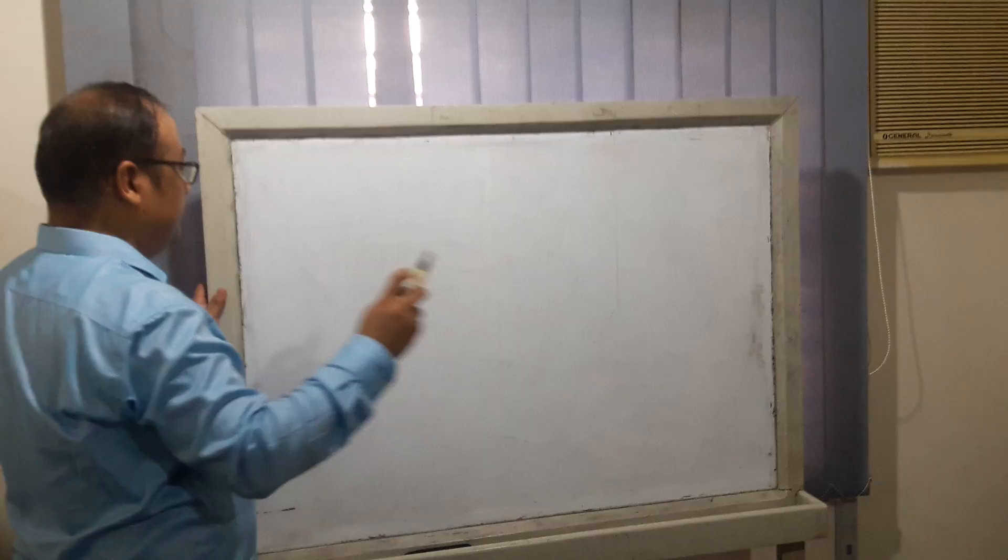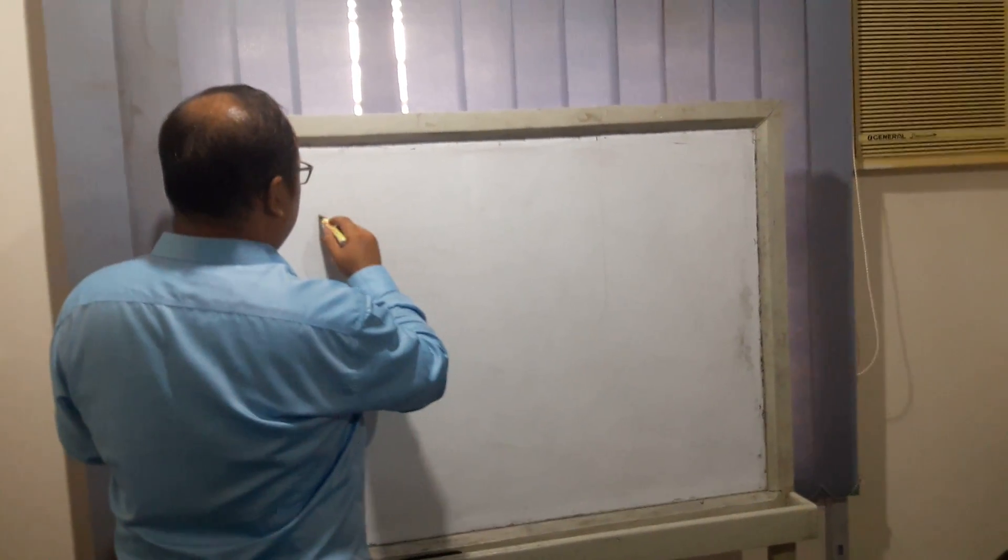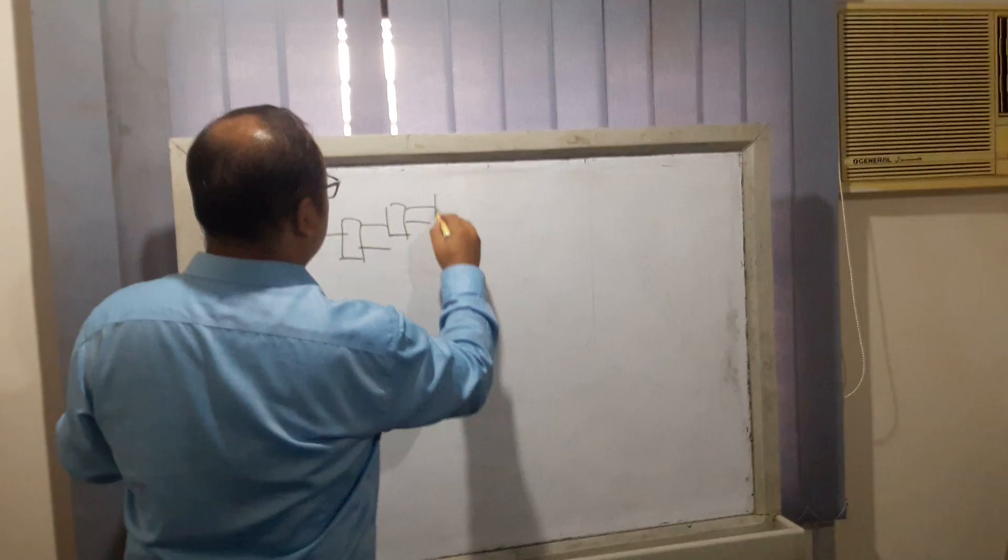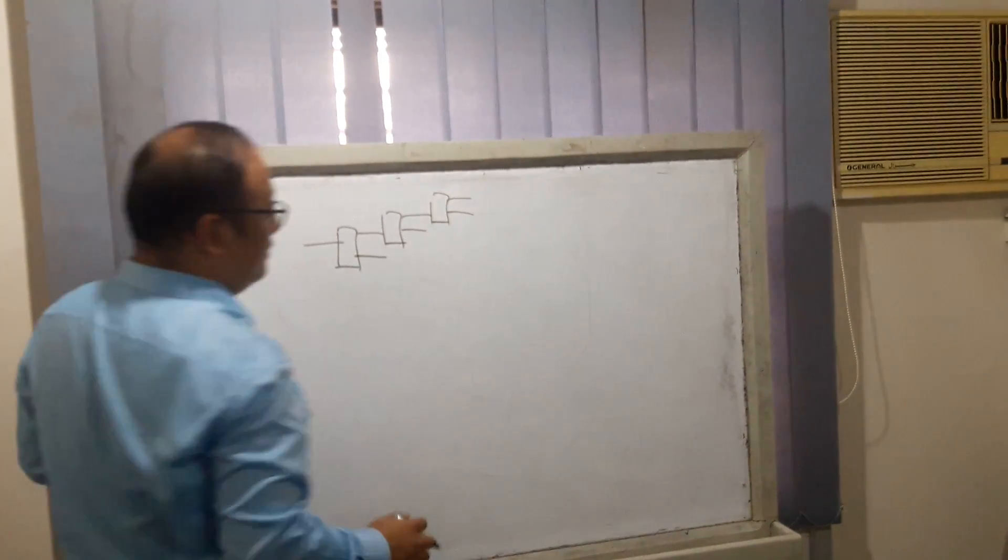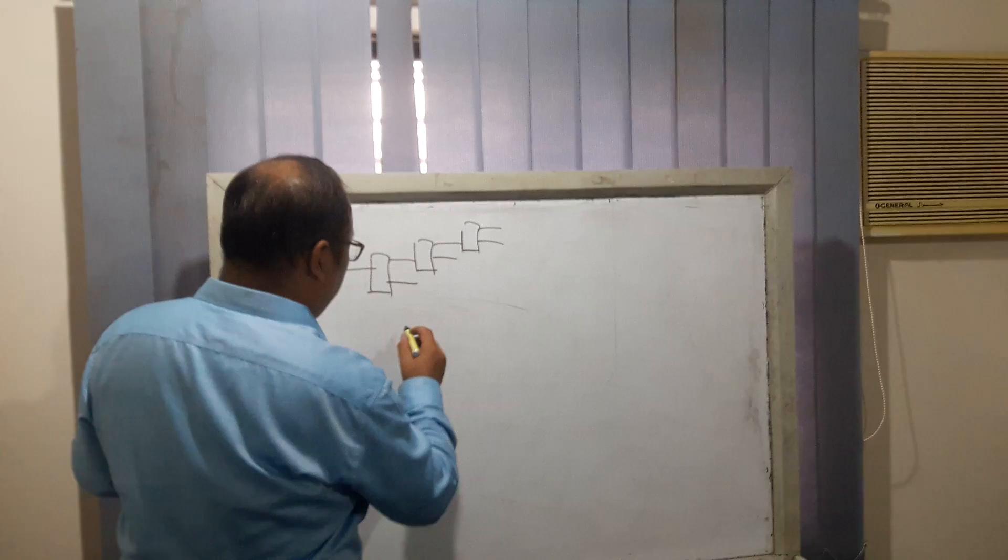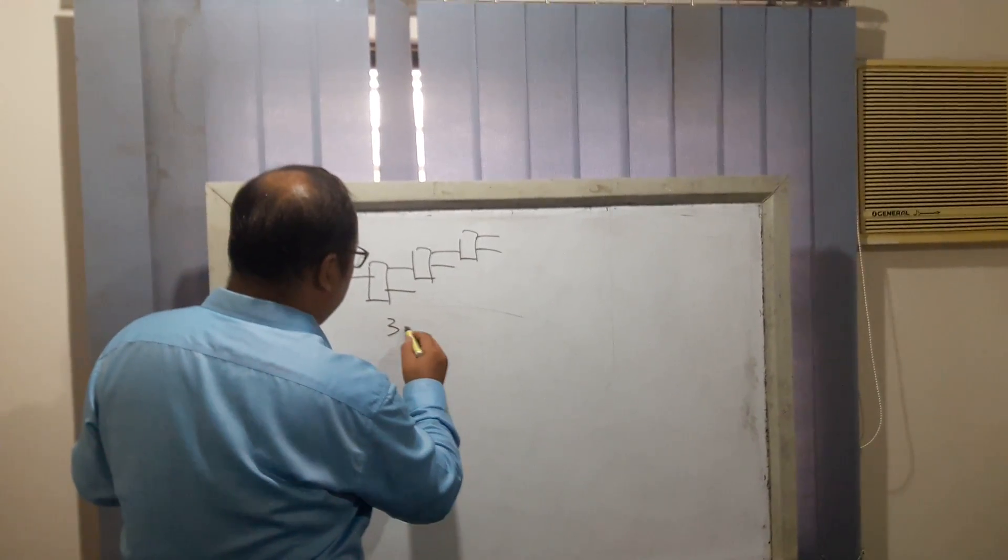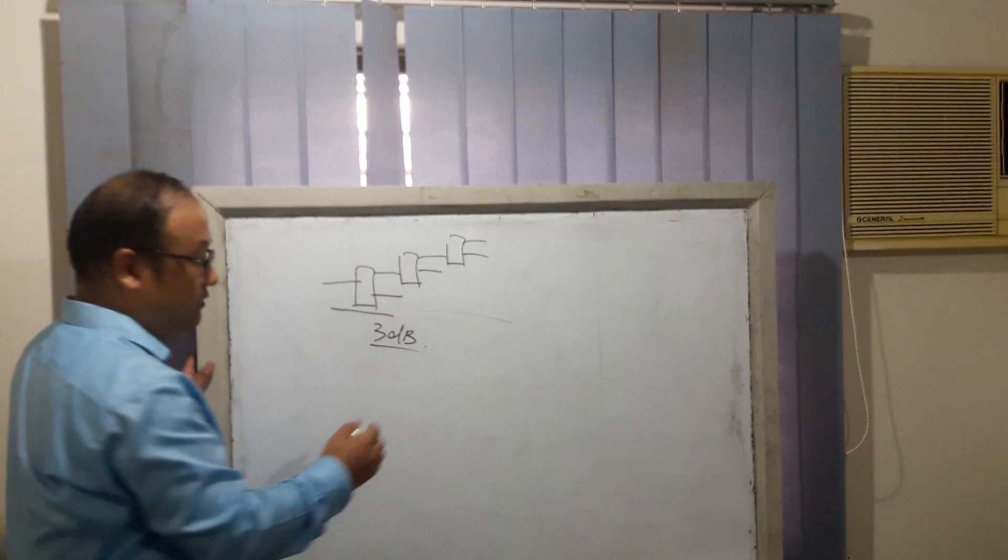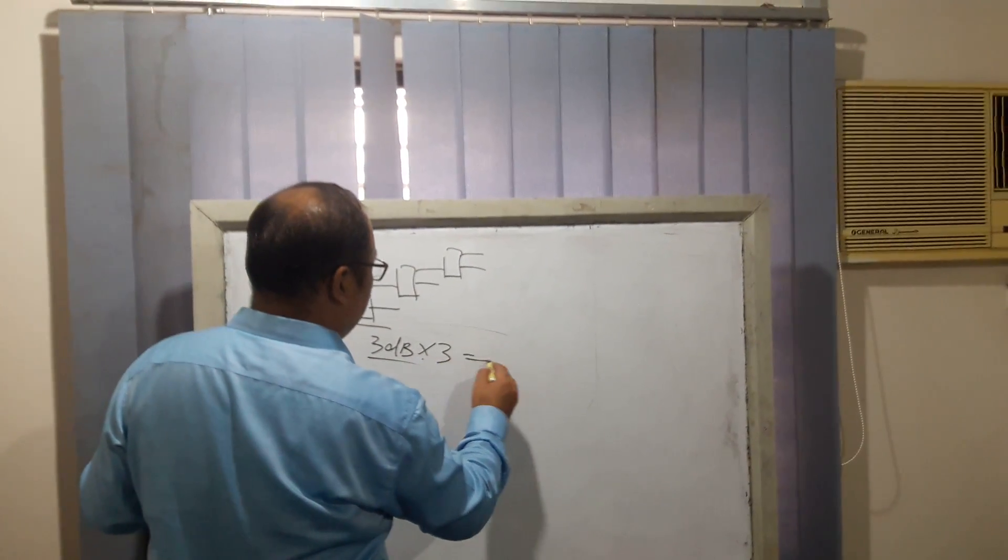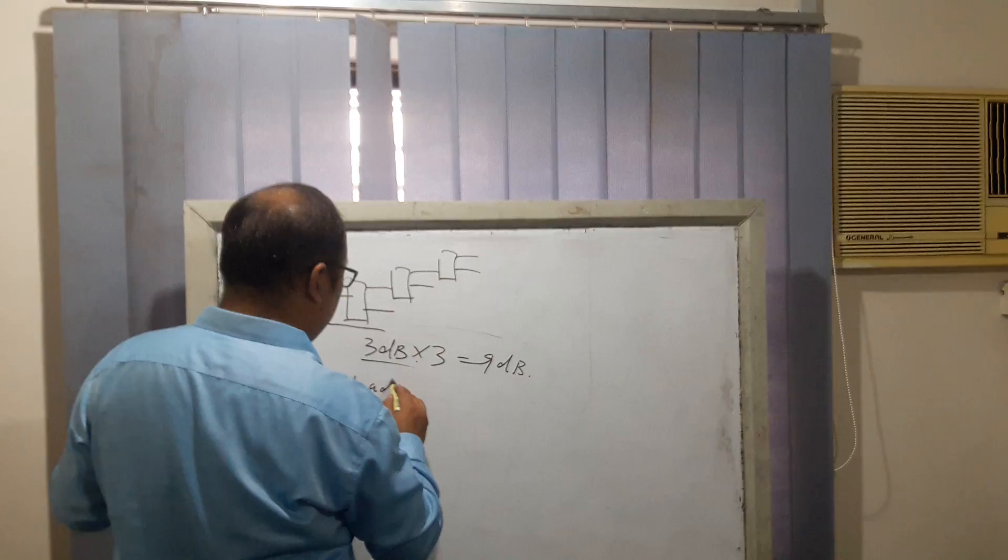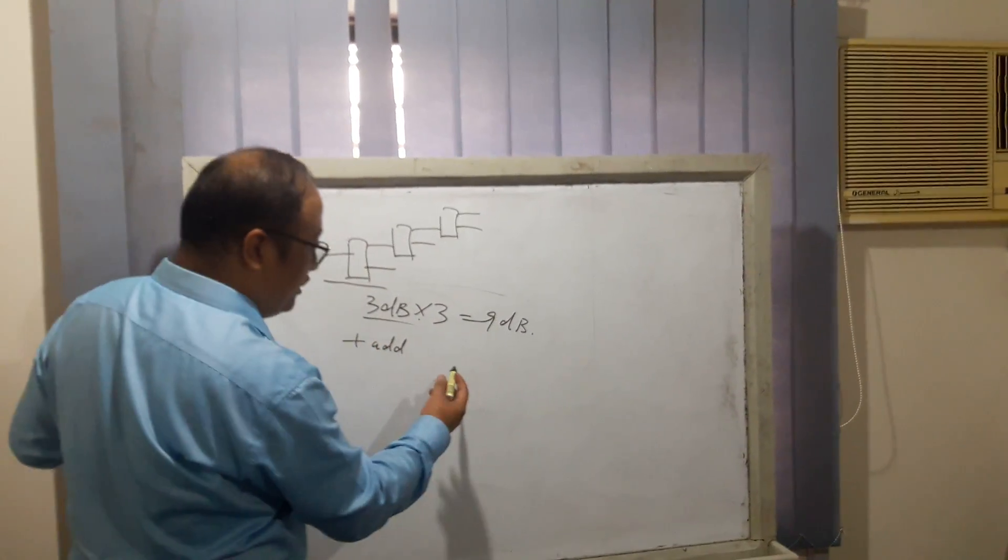The same measure for 1:8 - it's just three stages. The attenuation is about 3 dB, the basic attenuation of 1:2, into 3, which is 9 dB, plus additional attenuation.